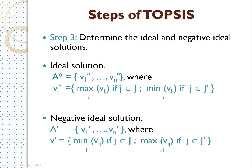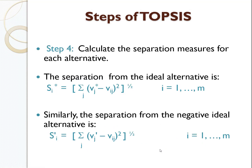Step 4 is to calculate the separation measure for each alternative. The separation from the ideal alternative is calculated by subtracting the ideal value from each criterion value Vij for each alternative, taking the square, summing across all criteria, and then taking the square root. Similarly, for the negative ideal solution, the same procedure is followed but subtracting the negative ideal value from Vij, then taking the square root to get Si⁻.